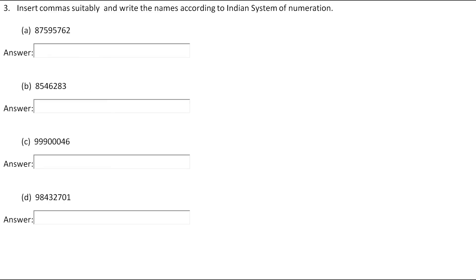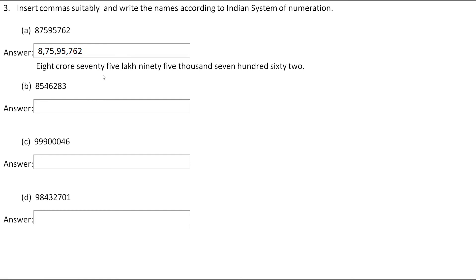The next question asks us to insert commas suitably and write the names according to the Indian number system. We put commas from the right by leaving the first three digits, then leaving two digits at a time. The first number is 87595762. Leaving three digits, putting a comma, then leaving two digits and putting a comma, and again leaving two digits and putting a comma, the number name is 8,75,95,762 — eight crores seventy-five lakh ninety-five thousand seven hundred sixty-two.